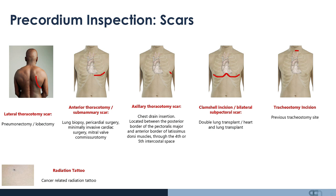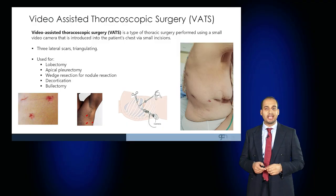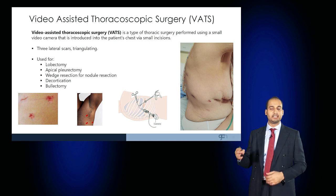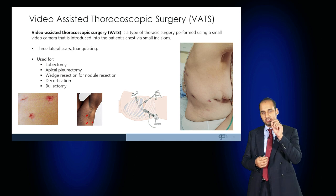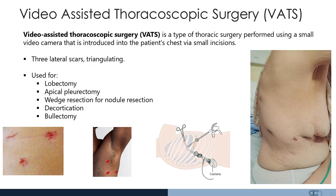Examine for any tracheostomy scars — any patient with a serious respiratory condition may have required intensive care, and if they have a tracheostomy scar also look for associated central line scars. A radiation tattoo is an important finding, used to direct radiation rays when treating cancers. A triangulated scar — three scars that triangulate — is seen as a consequence of VATS, or video-assisted thoracoscopic surgery, performed using a small video camera introduced into the chest with two additional incisions. This can be used for lobectomy, apical pleurectomy, wedge resection to examine a nodule, decortication, or bullectomy for lung volume reduction in advanced COPD.